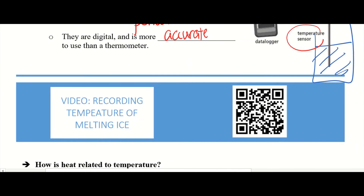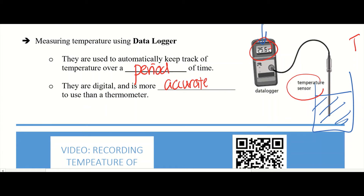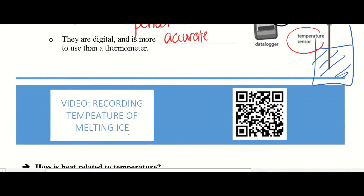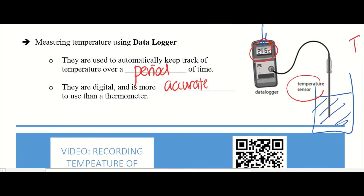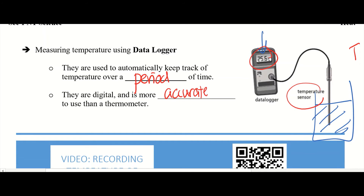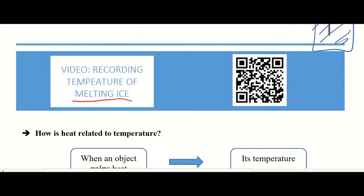In your notes you will see a QR code — it's a video to show you someone using the data logger to record the temperature of melting ice, starting from negative temperature all the way up to zero, and you can see from the computer screen how the temperature increases with time. I'll put the link in the description below. Please do take a look — you can actually see how a data logger looks like and how it is connected to a computer.